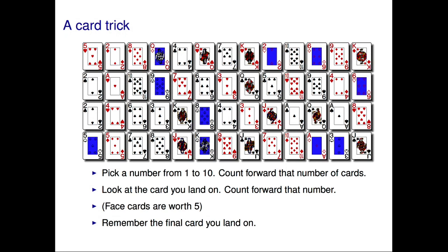The magician's task is to guess the final card that the victim lands on. The beautiful mathematical fact is that if the magician starts the same counting process as the victim, then with high probability they will end on the same card as the victim, regardless of which card they choose to start on. For example, suppose the magician chooses one instead of four as their initial guess. They'll land on a five, count forward five, end on a queen, count forward five, and again land on the six of diamonds — exactly the same as the victim did. And from that point on, they're using the same counting procedure, so they end up at the same final card.